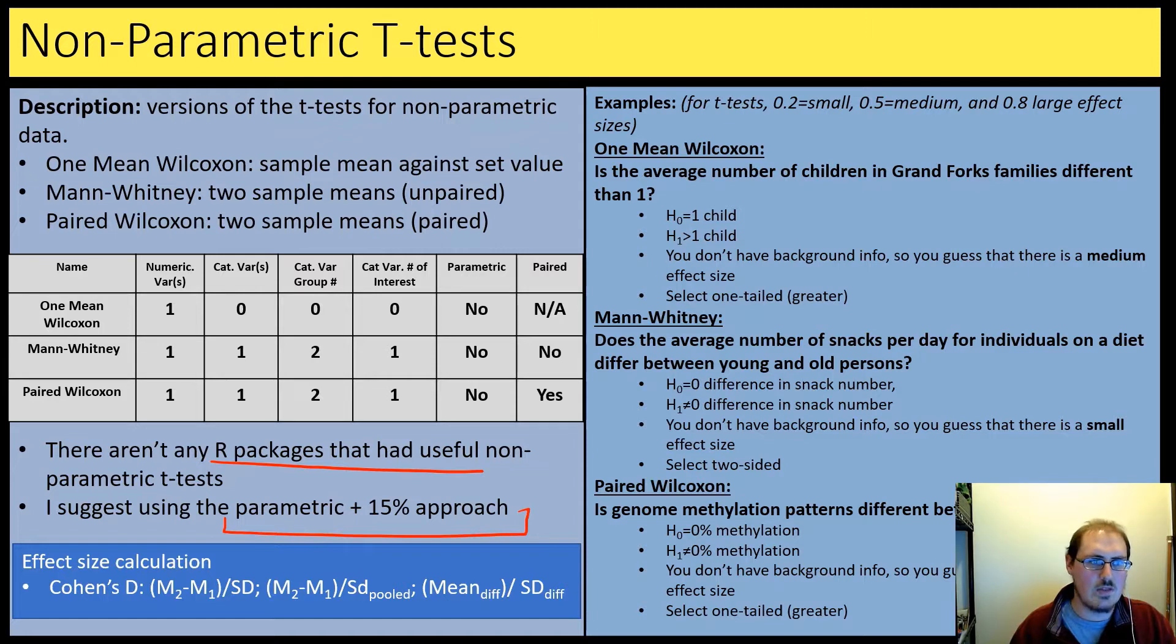So we'll be looking at the one-mean Wilcoxon, the Mann-Whitney, and the paired Wilcoxon. These are non-parametric analogs of the one-sample t-test, the two-sample t-test, and the paired t-test. So effect size calculations will be like we've seen before. Let's take a look at some examples.